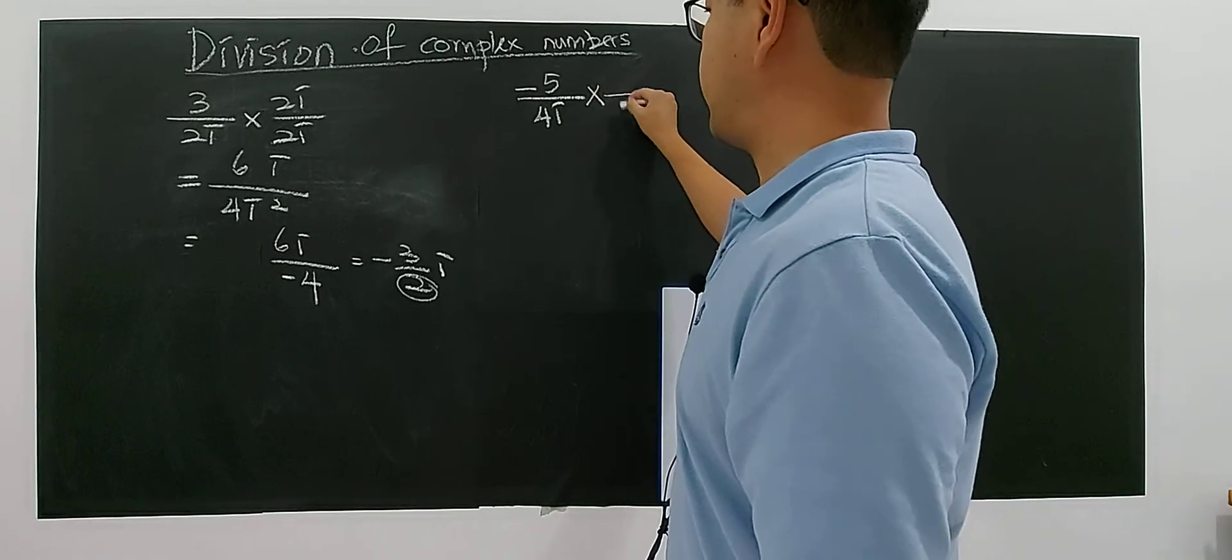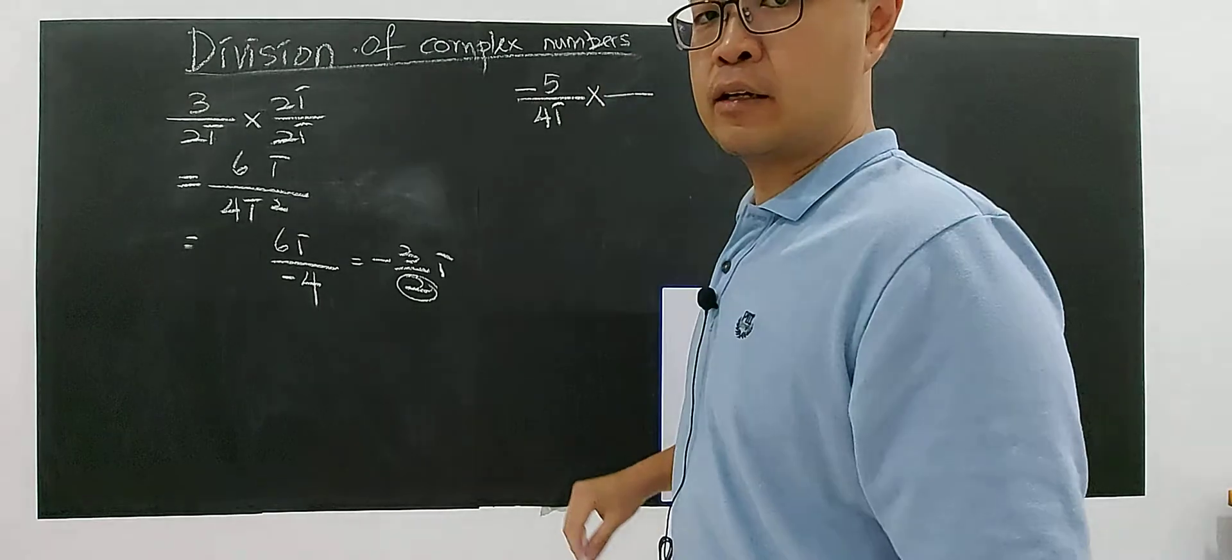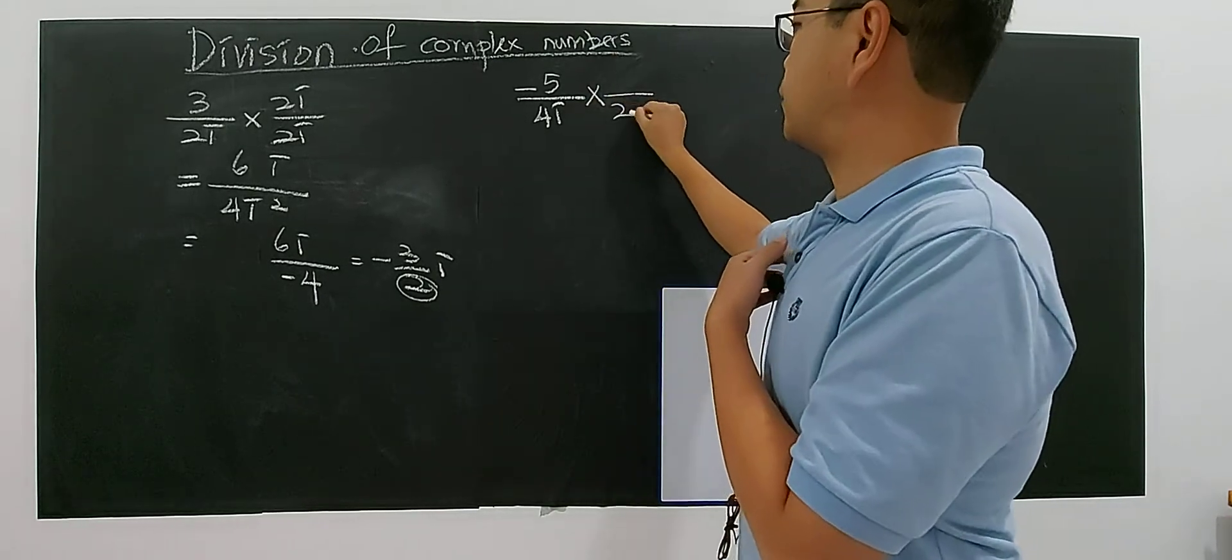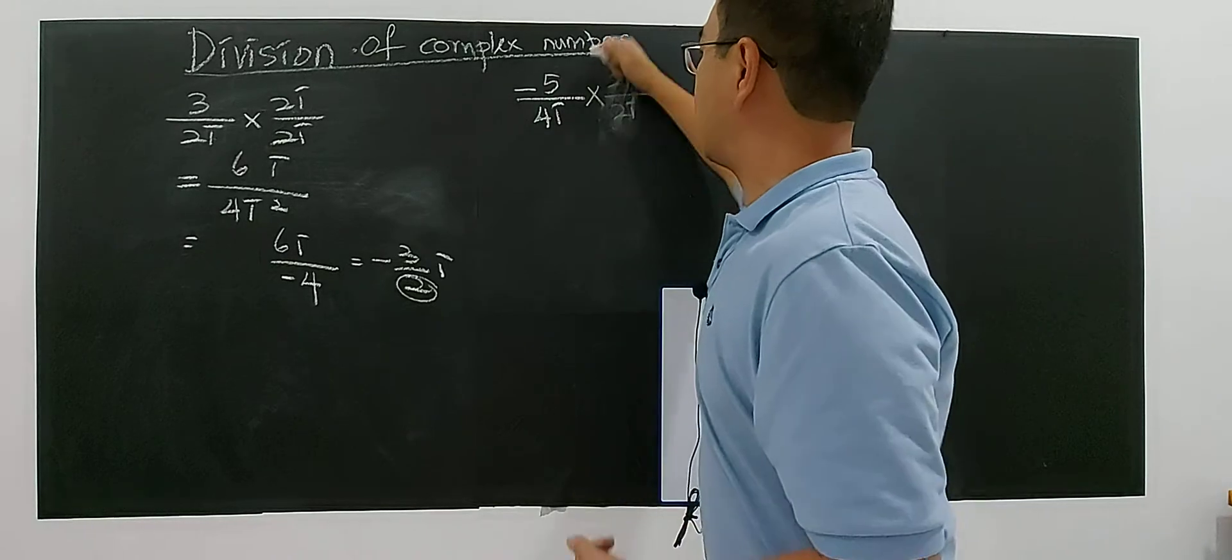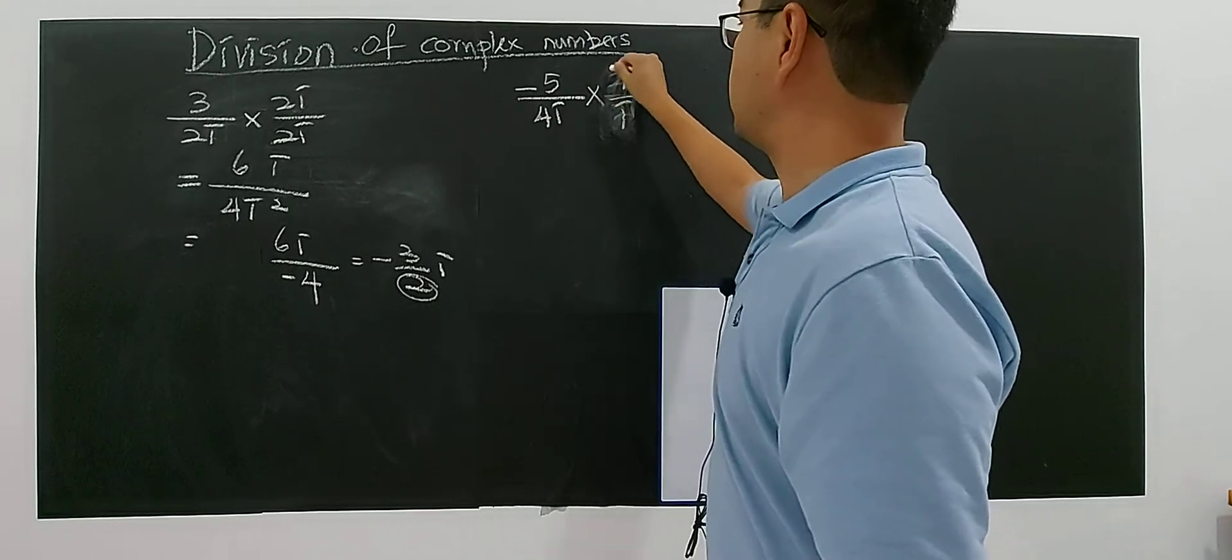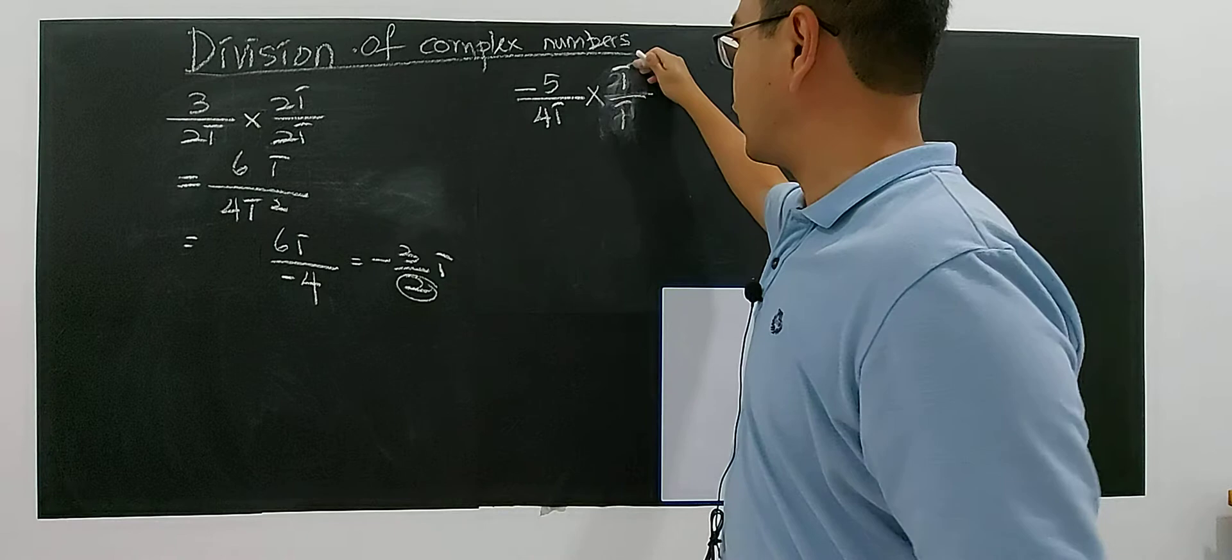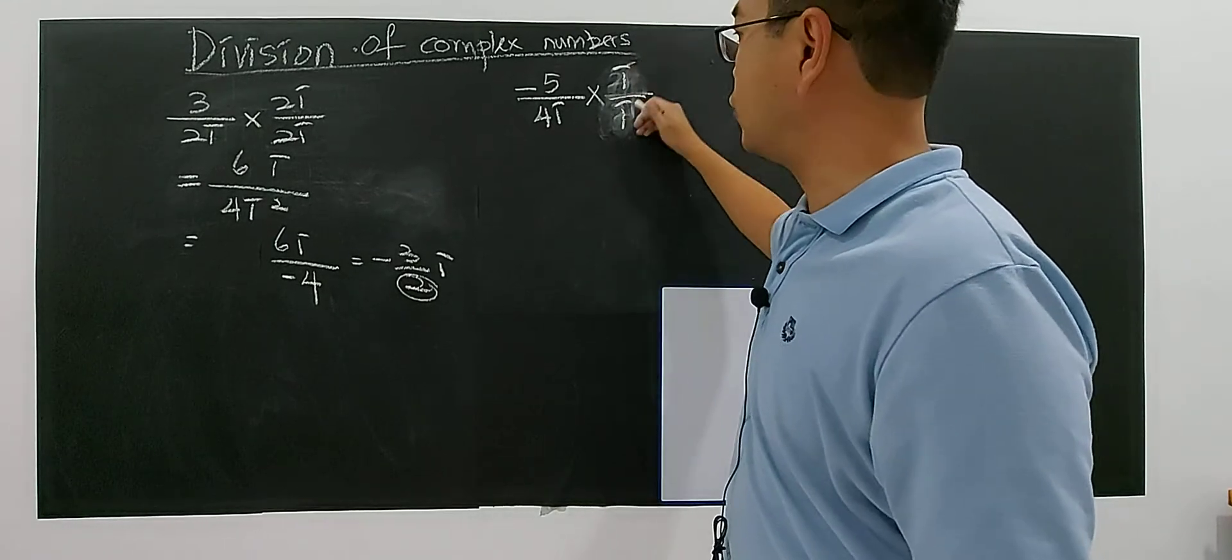I can multiply 4i and 4i, okay? Or I can multiply 2i over 2i also can, alright? Or I multiply i over i - I usually will do i over i. Okay, anything, okay, as long as these two are the same.